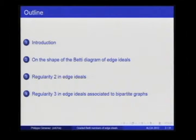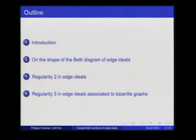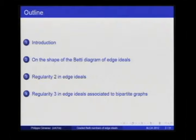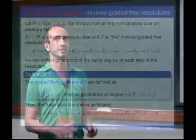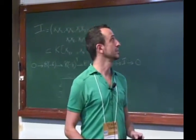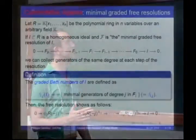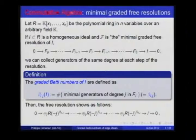This is the outline of the talk. I will first introduce the notations and the objects we will work with, then say something about the shape of the Betti diagram of edge ideals in general, and then talk about two things: the regularity 2K's and the regularity 3K's, in the case of bipartite graphs. This is a work in between commutative algebra and combinatorics. I will start from the commutative algebra side, show the bridge, and then go to the combinatorial side.